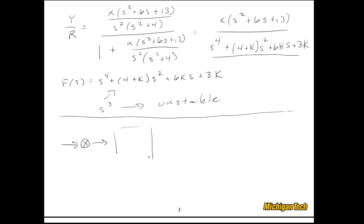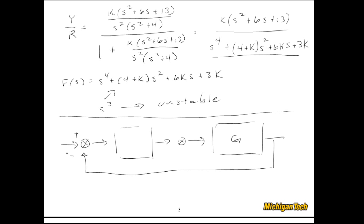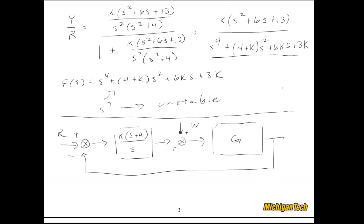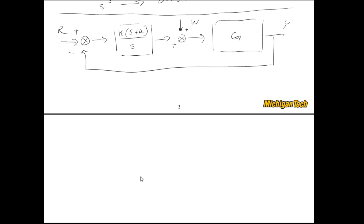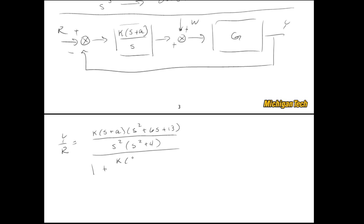We need a pole at the origin in the controller, but we also need all coefficients present in the characteristic equation. So let's add a zero to the controller: K(s + a)/s. Forming Y/R, the loop transfer function is K(s + a)(s² + 6s + 13) / (s²(s² + 4)).